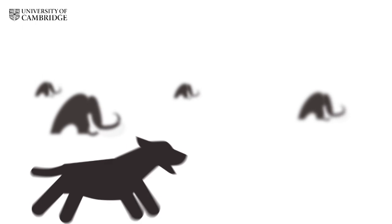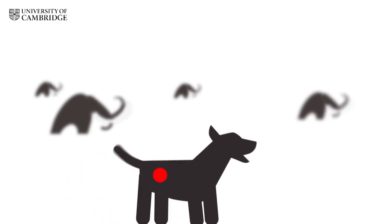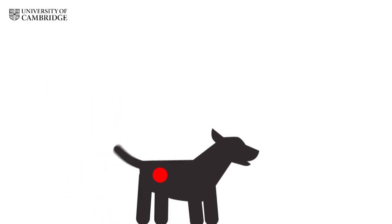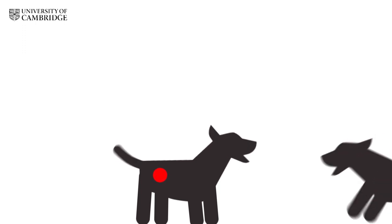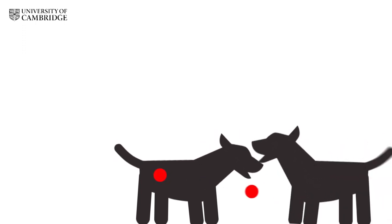11,000 years ago a dog developed a cancer. But instead of dying when the dog died, this cancer took on a life of its own by spreading its cells to other dogs during mating.